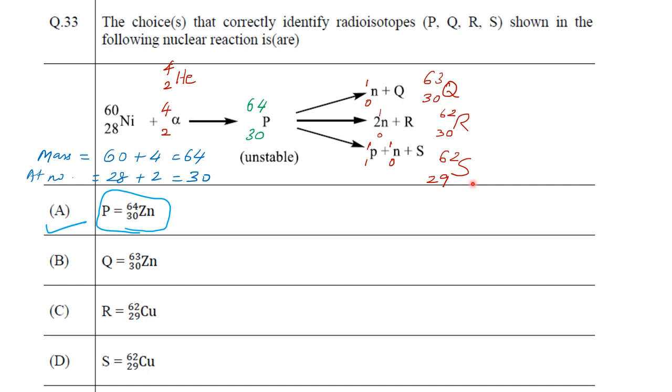Among these three, let us match up. 63, 30 for Q is correct, so option B is also correct because it attributes to what we have seen. Coming to option C, R must be 62 and 30, but what we see here is R is 62 and 29, so the option C is wrong.